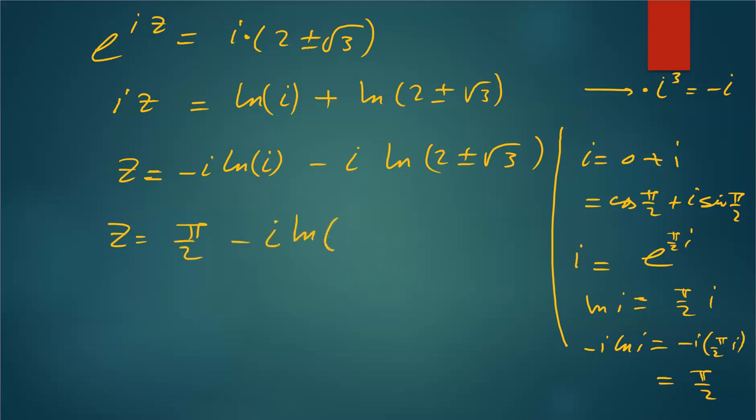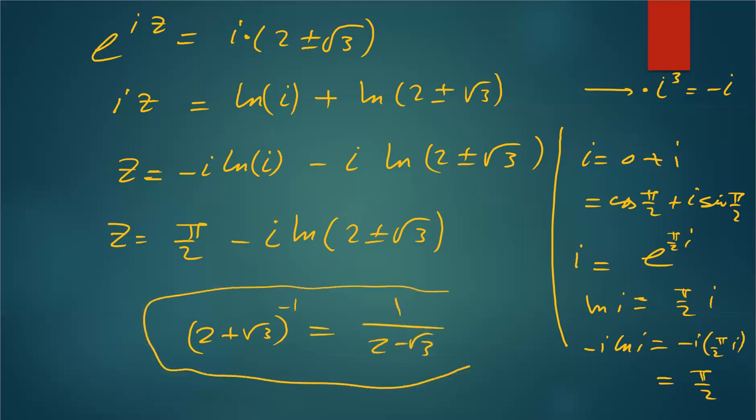So I can realize that in its simplest form to justify: π/2 here minus i ln(2 ± √3). One more thing: you can prove that (2 + √3)^(-1) is 1/(2 - √3). You know that's a very famous problem in middle school. You multiply here by the conjugate to prove that statement.